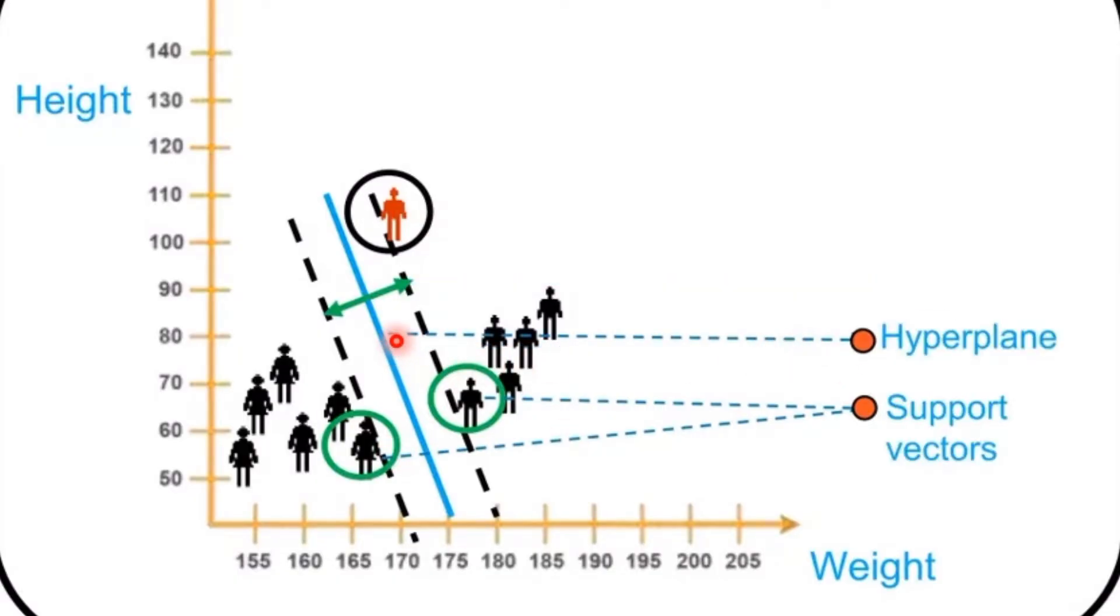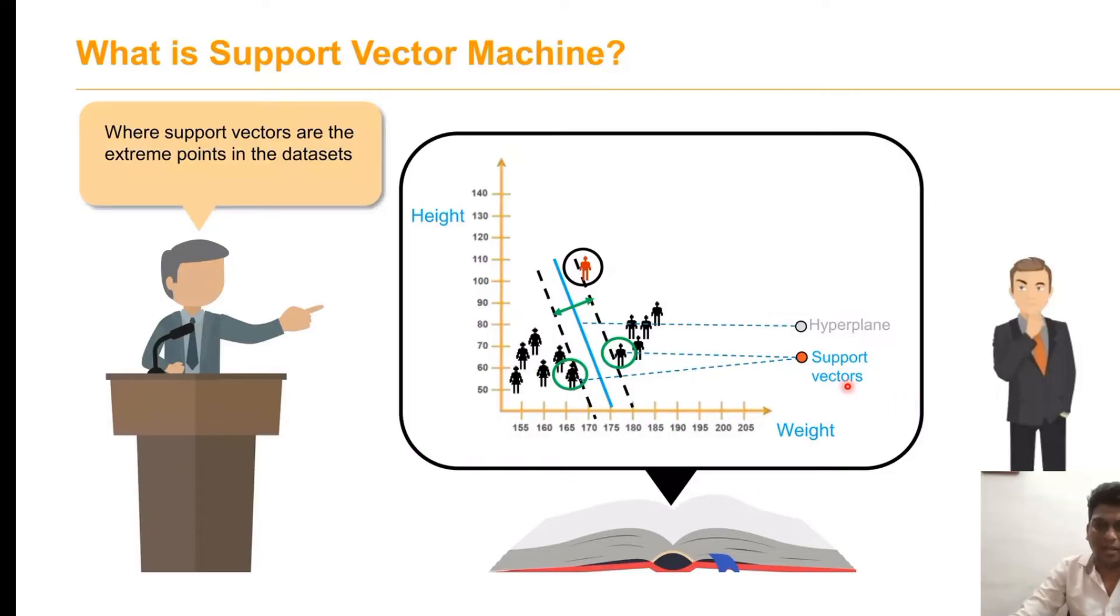That line, which we call the hyperplane. Those points are called support vectors. The distance between the support vector and hyperplane should be as far as possible. Support vectors are extreme points in the data sets.